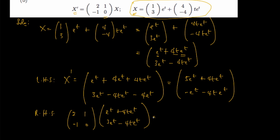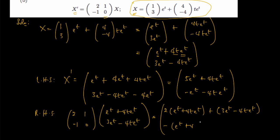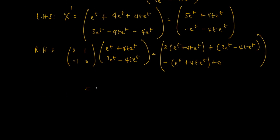Expanding the matrix multiplication: the first row gives 2 times (e^t + 4t·e^t) plus 1 times (3e^t - 4t·e^t), which simplifies to 2e^t + 8t·e^t + 3e^t - 4t·e^t = 5e^t + 4t·e^t. The second row gives -1 times (e^t + 4t·e^t) plus 0 times (3e^t - 4t·e^t), which gives -e^t - 4t·e^t.